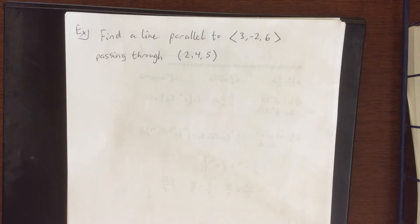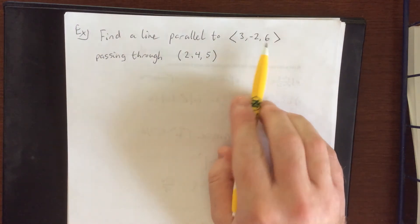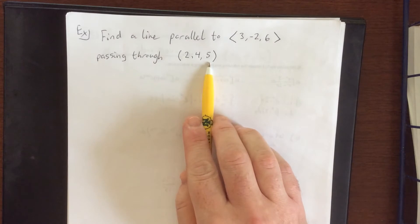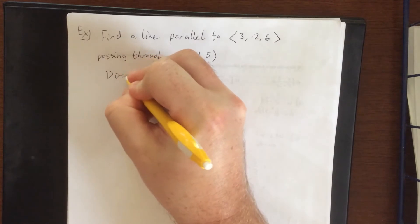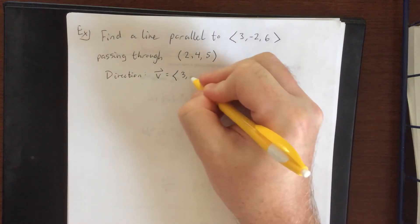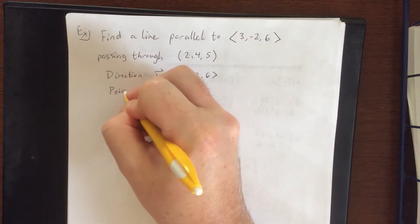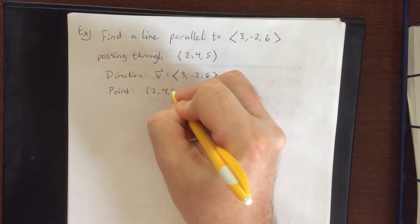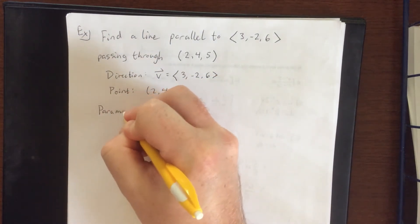The first one is kind of a softball to get us warmed up. Find a line that is parallel to the given vector <3, -2, 6> that passes through the point (2, 4, 5). What we're trying to get is a point on the line and a direction vector. Since we already have something parallel, we'll use that directly. This is one of those nice warm-up problems to lull us into a false sense of security.